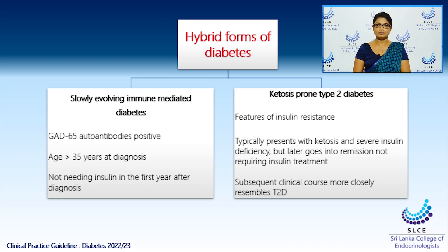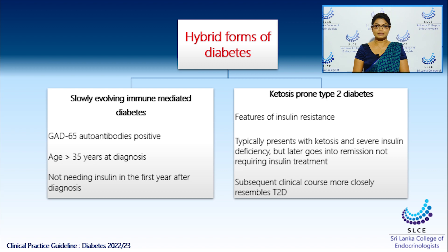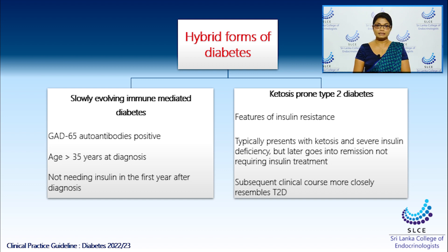The second would be the ketosis-prone type 2 diabetes. In this type, there will be features of insulin resistance. However, typically at presentation, the patient will have features of ketosis and severe insulin deficiency, but later on goes into remission, not requiring insulin. Subsequently, in the clinical course, the patient will closely resemble type 2 diabetes.